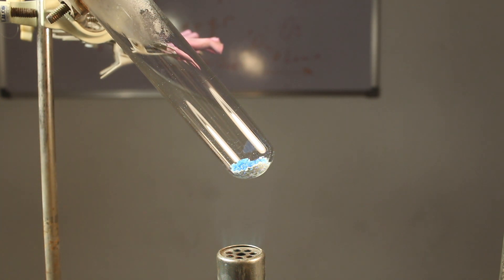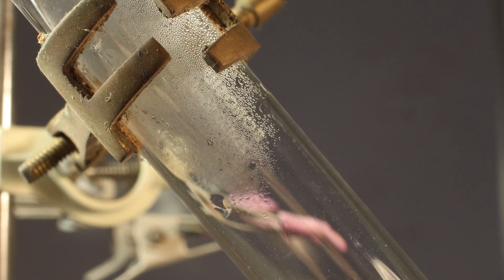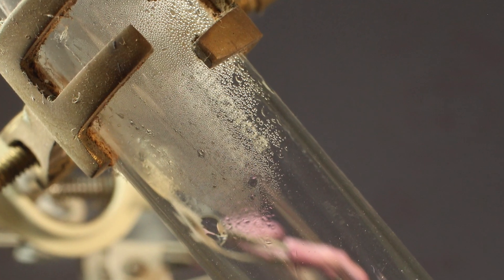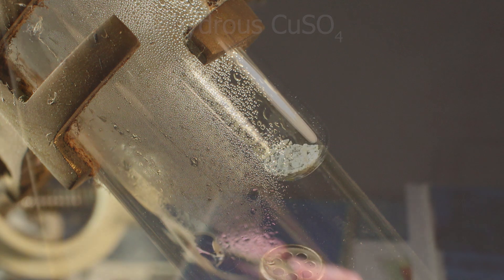Water was surrounding copper ions forming complexes, and these complexes were giving copper sulfate blue color. Here is the water of crystallization driven out, and what is left behind is anhydrous copper sulfate.